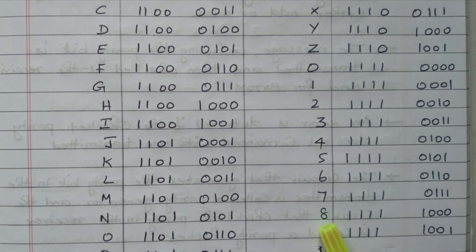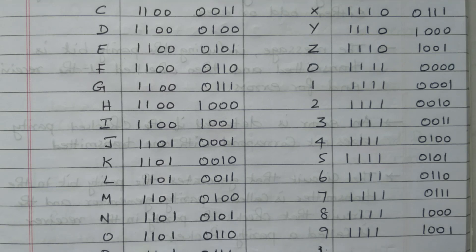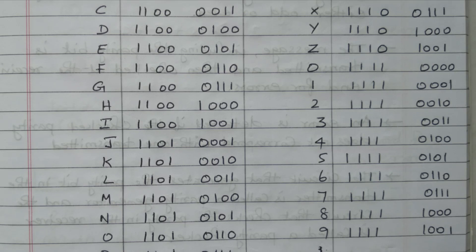In total, EBCDIC has 256 characters available — including alphabets, small letters, special symbols, and control instructions — though the table shown covers only capital letters and numerical values. This extended binary code has double the characters of ASCII, which has only 128, and is mainly used in IBM mainframe computers. Subscribe to the channel for more videos and notifications. Soft copy of this material is available in the drive link given in the description box. Thank you for listening.